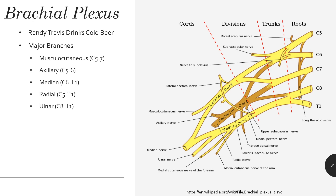That makes intuitive sense looking at the diagram. Those trunks then each split — three trunks give rise to six divisions, each trunk having an anterior and posterior division, so three times two equals six. Those divisions then combine again into cords: lateral, posterior, and medial. There's no anterior cord because, of course, it'd be easier to block — instead it's posterior, hiding behind the artery. Those cords ultimately give rise to the five major branches: musculocutaneous, axillary, median, radial, and ulnar nerves.